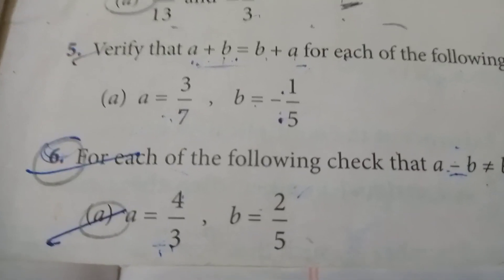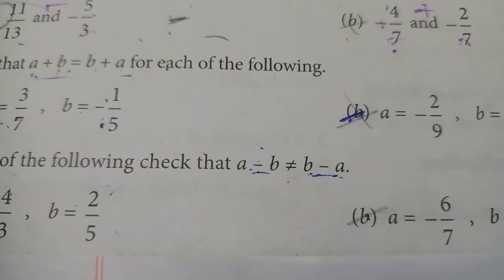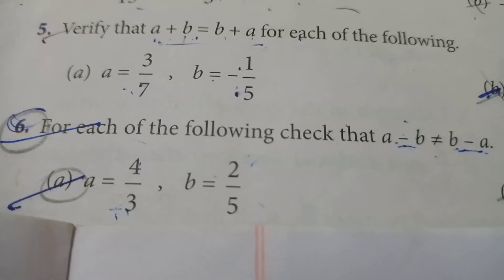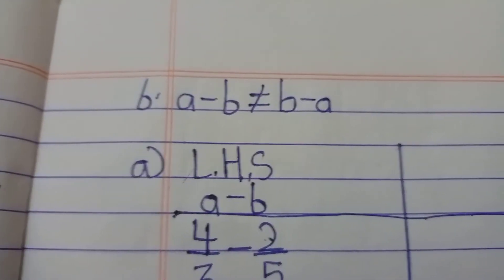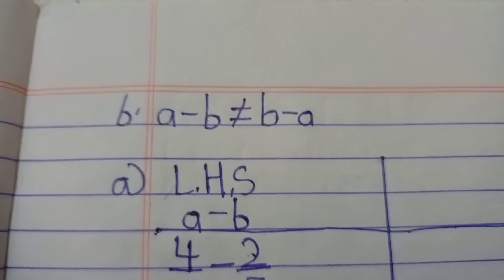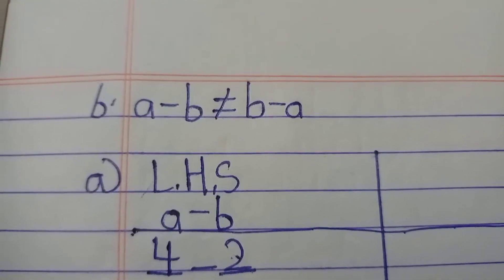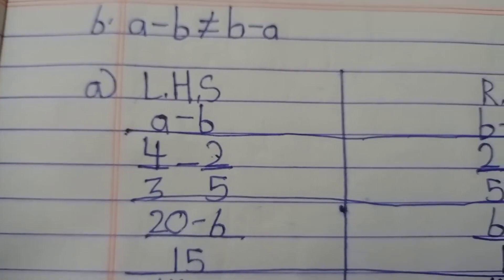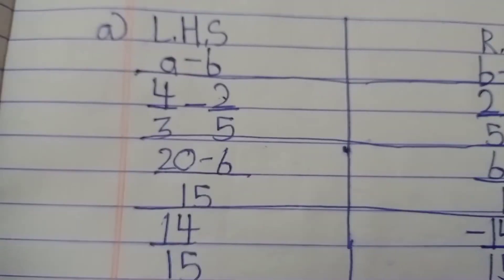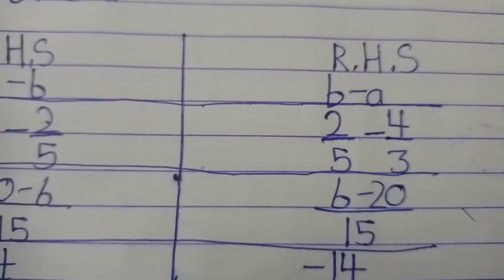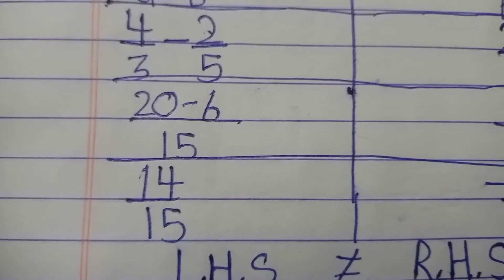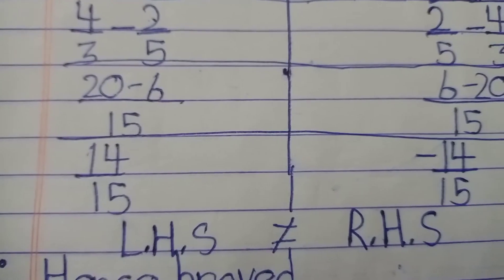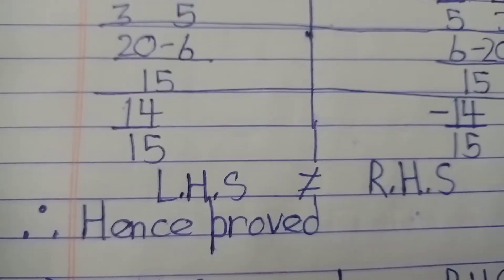Sixth question: for each of the following, check that a - b ≠ b - a. Part (a): a = 4/3, b = 2/5. LHS = a - b = 4/3 - 2/5 = (20 - 6)/15 = 14/15. RHS = b - a = 2/5 - 4/3 = (6 - 20)/15 = -14/15. LHS ≠ RHS. Hence proved.